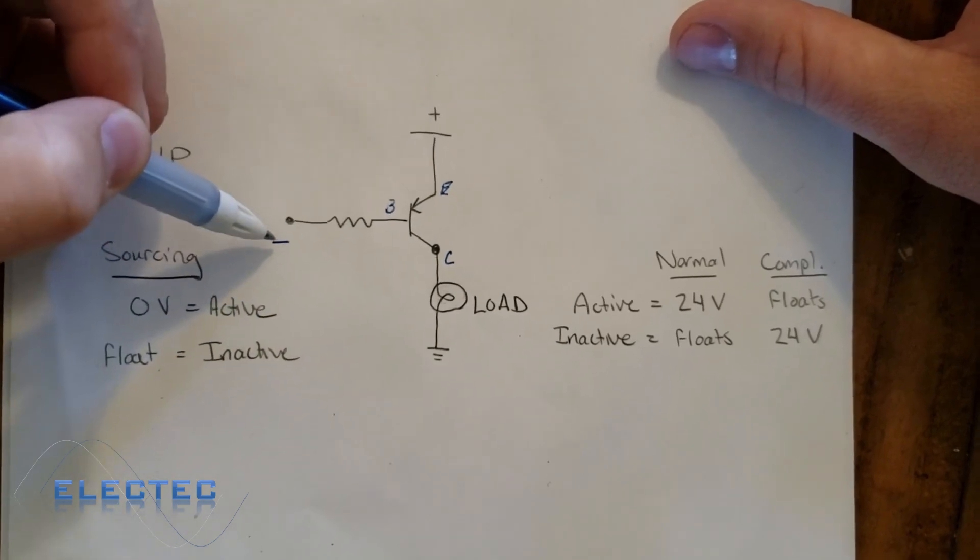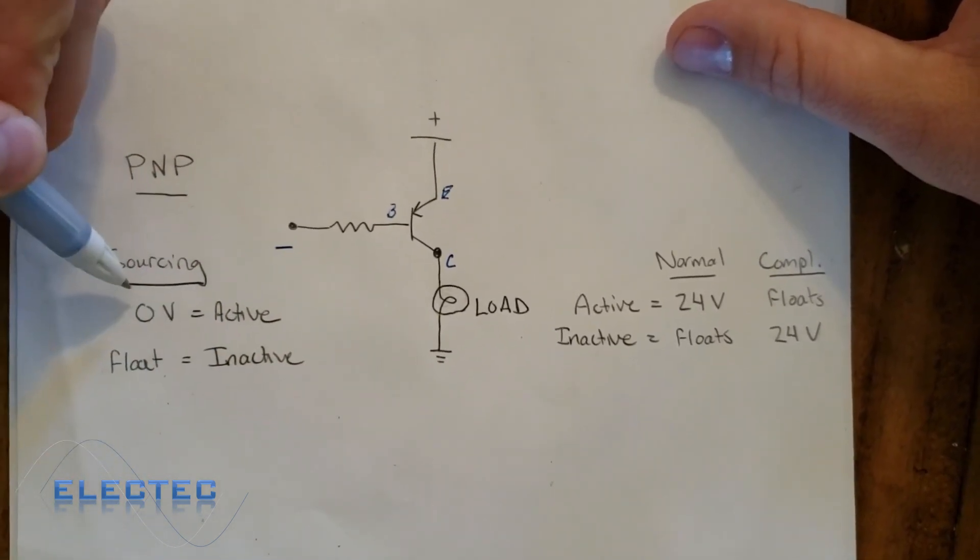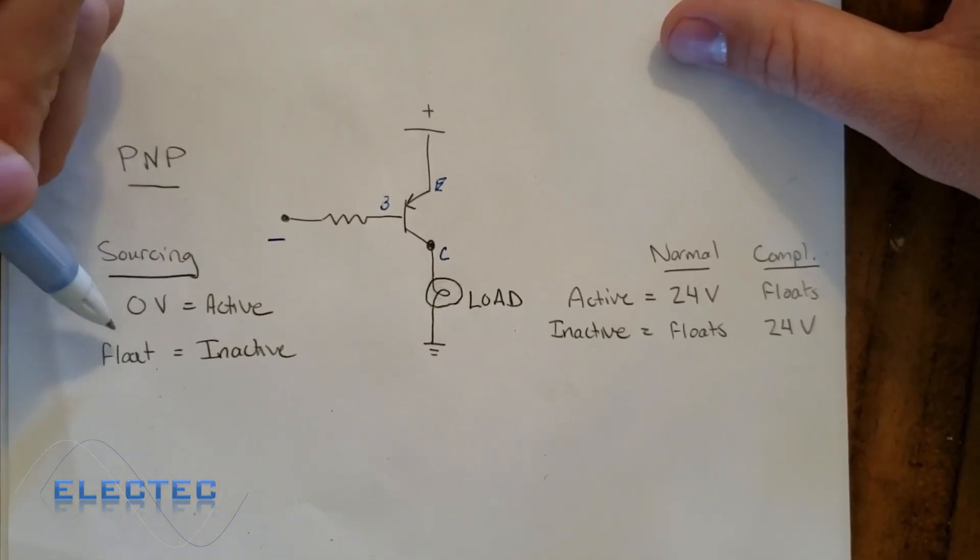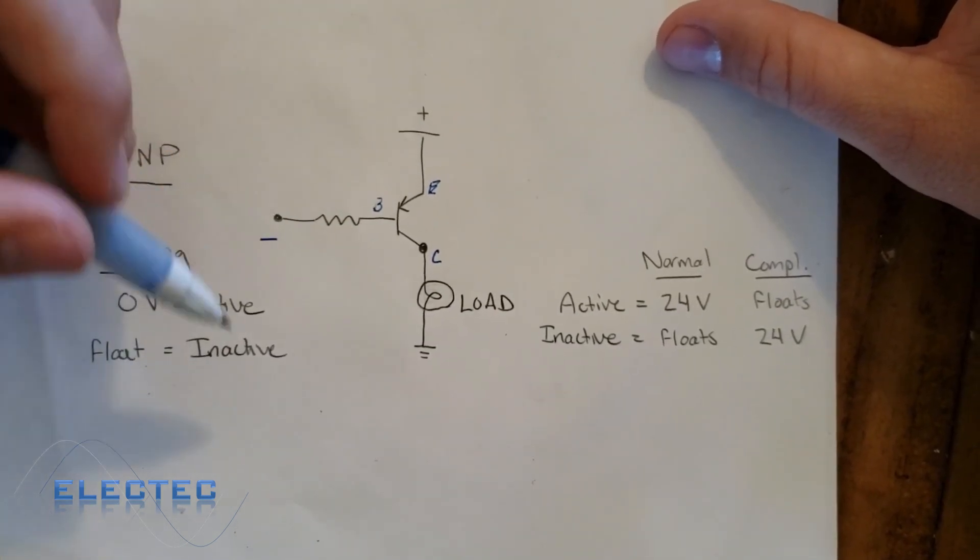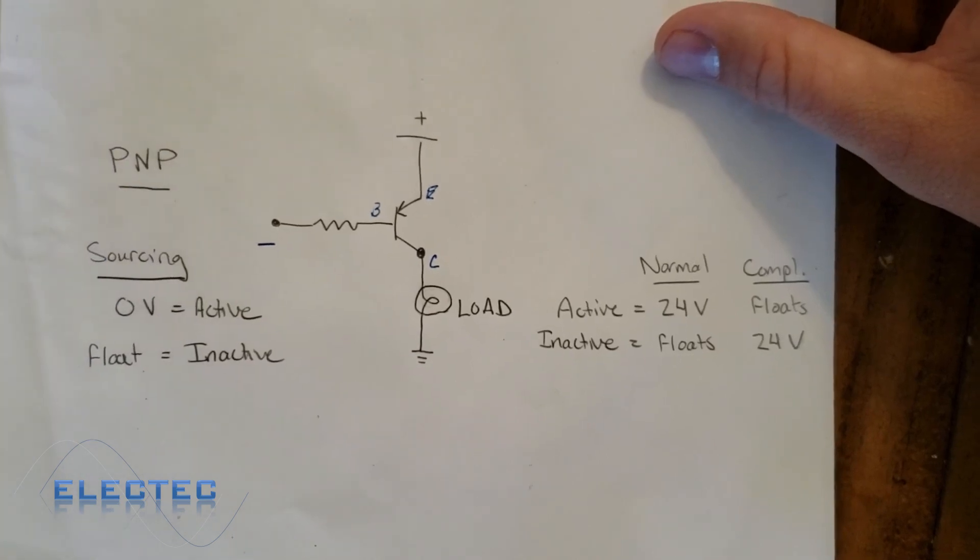So when we give this a negative, we activate it. So in the common industrial world, that would be zero volts. Once we put zero volts on the base side, we activate the transistor. It turns on.